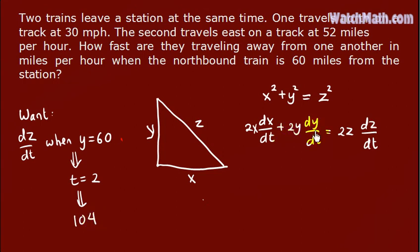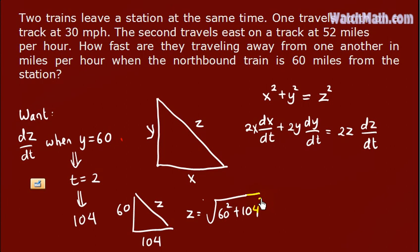Now we need to find Z when Y equals 60 and X equals 104. So Z equals the square root of 60 squared plus 104 squared.